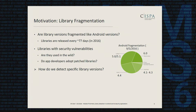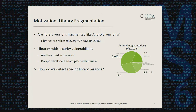Another interesting question besides attributing security vulnerabilities to the correct entity is: does something like library version fragmentation exist on the Android ecosystem? Some of you may have heard about Android version fragmentation — many different Android versions installed on different devices, with different feature sets and security patch levels. Now imagine there are hundreds of different libraries available with even more library versions, and on average every 77 days a new library version comes out.